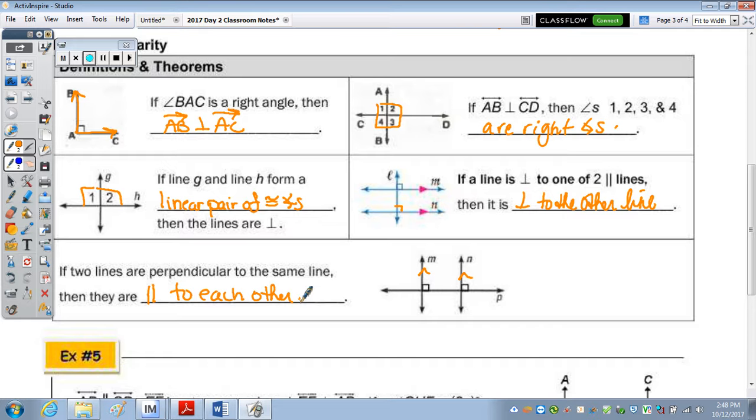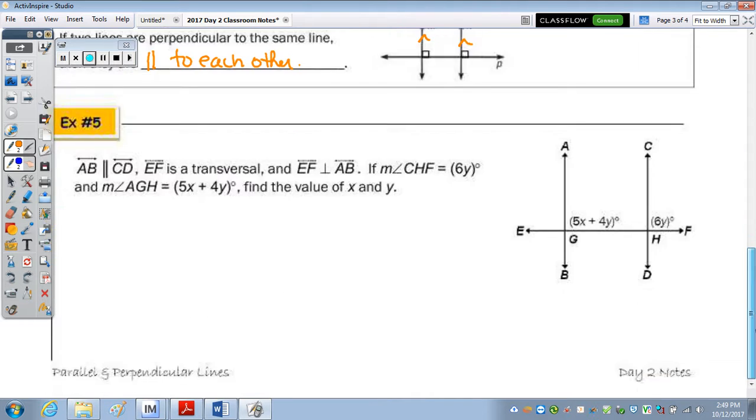So number five and six are just algebra questions. So we should be able to go through those quickly. Using the algebra, it says that AB is parallel to CD, so I'm going to mark it. EF is the transversal, and EF is perpendicular to AB. Well, if the lines are parallel, that means it's also perpendicular to the other line. And if this is 90, the supplement's 90. So I know that 5X plus 4Y equals 90. And we also know that this supplement is also 90. So 6Y equals 90. These are two equations, but one of them has one variable, so we don't need to solve a system. Divide 90 by 6, and Y is 15.